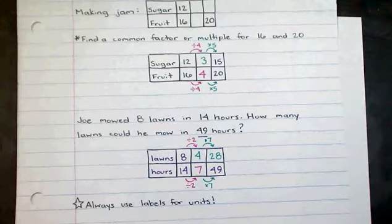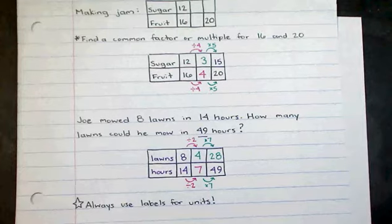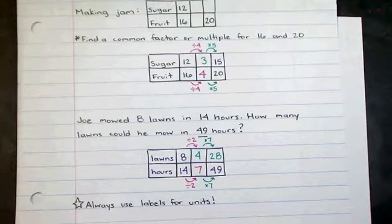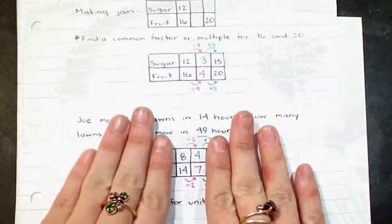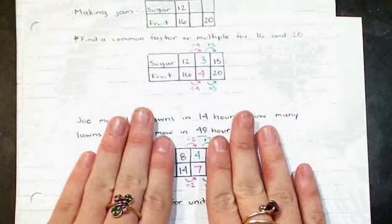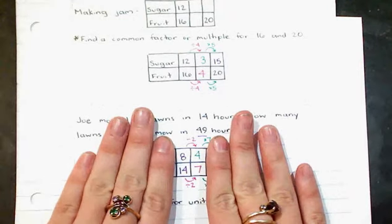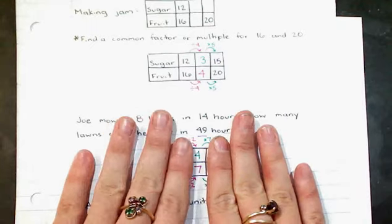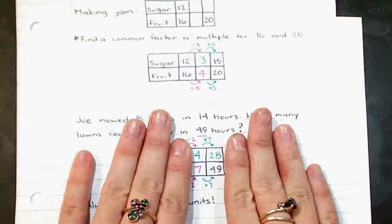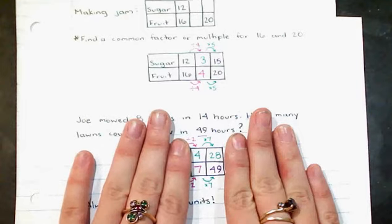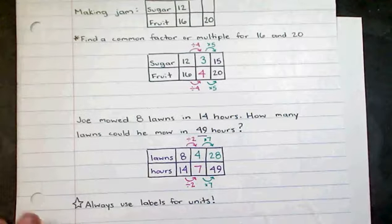It is really important, and I have this note at the bottom, that you always use labels for your units. It's also important just to go back and check your work. Make sure that each of the columns is filled with equivalent ratios. So 8 14ths and 4 7ths, those are equivalent fractions. 4 7ths and 28 49ths are also equivalent fractions. So I made sure that I didn't make any mistakes along the way.